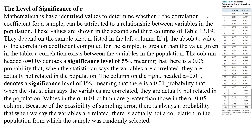The last thing is the level of significance of r. Mathematicians have identified values to determine whether r, our correlation coefficient for a sample, can be attributed to a relationship between variables in the population. These values are shown in the second and third columns of this table: alpha 0.05 and alpha 0.01. They depend on the sample size n, which is in the left column. If the absolute value of r computed for the sample is greater than the value given in the table, then a correlation exists between the variables in the population.